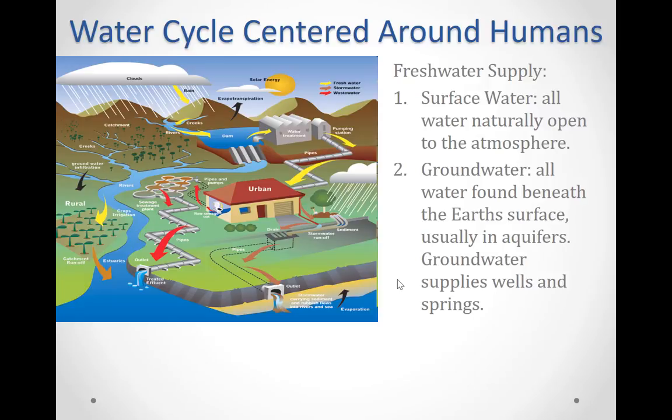Groundwater is a supply of fresh water found beneath the earth's surface, usually in aquifers. Groundwater supplies wells as well as springs. Ideally, water used as a drinking water source should be of the highest quality, reducing the cost of water treatment and the risk of contamination. Groundwater has traditionally been considered a high quality resource.